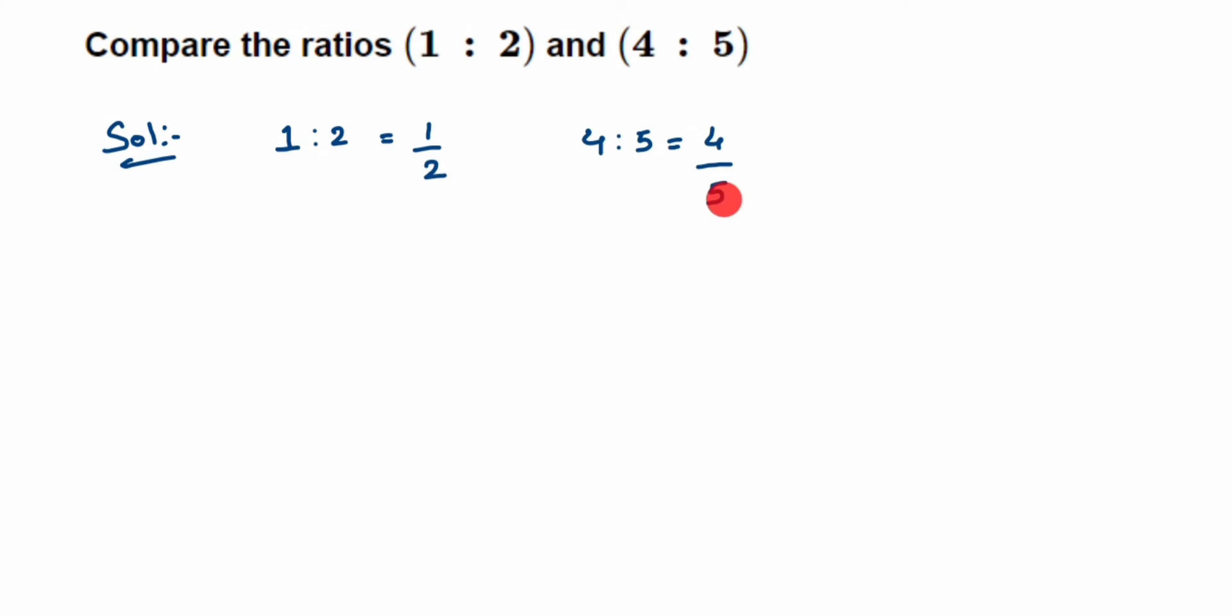So we're going to make it the same by taking LCM of 2 and 5. That is taking LCM of the denominators. So LCM of 2 and 5 will be 10.